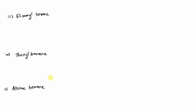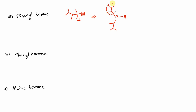Next is the third type of organoborane: disiamyl borane. The structure of disiamyl borane contains a borane attached with one hydrogen and a branched alkane chain. The IUPAC name of this branched alkane group is left as a question — comment down below if you know the answer, otherwise it will be revealed in the next class.